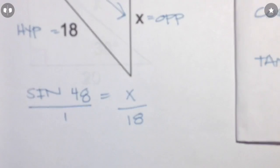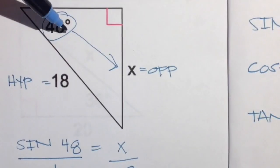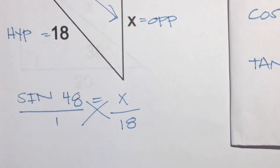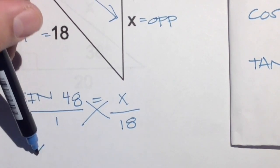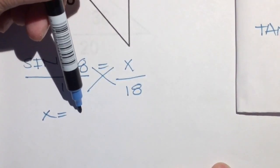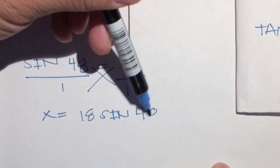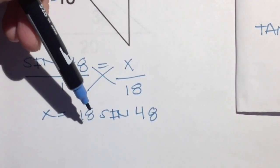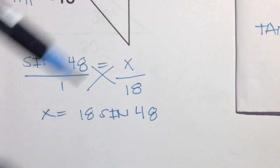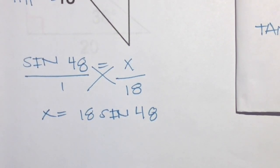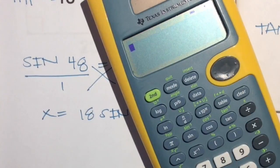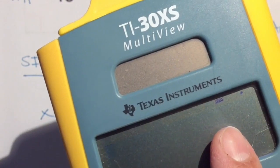Let's zoom in on our proportion: sine of 48 equals the opposite over the hypotenuse. Let's cross multiply — 1 times x is just x, and the other side gives us 18 times sine of 48. Put the number in front of the trig ratio, and x is by itself — we're done algebraically. But '18 sine of 48' is a weird answer, so let's get a numeric value. Grab your calculator and make sure it's in degree mode.